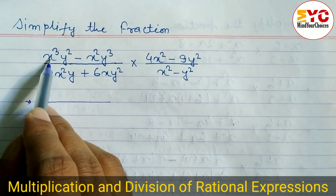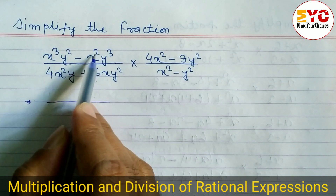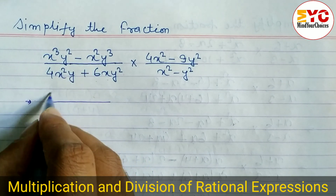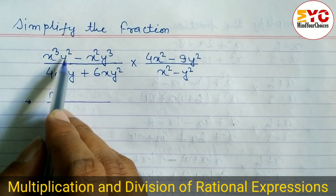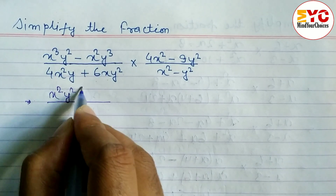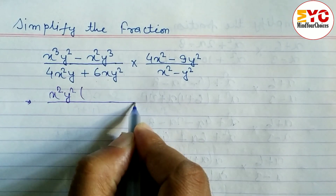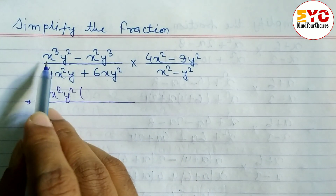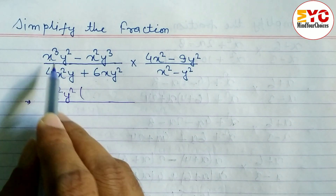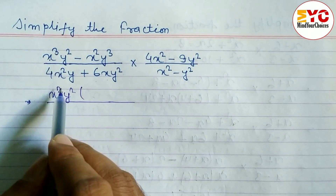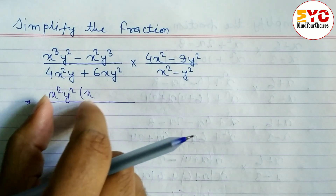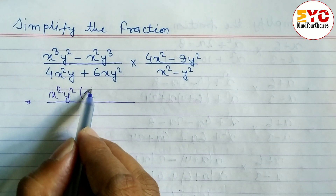First of all we have to take common. From x cube and x square, the lowest power is x square, so we take x square common. From y square and y cube, y square is common — lowest power. From x cube, x square is common, so remaining is x.